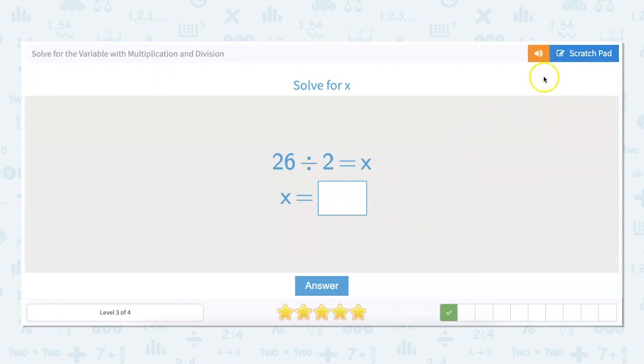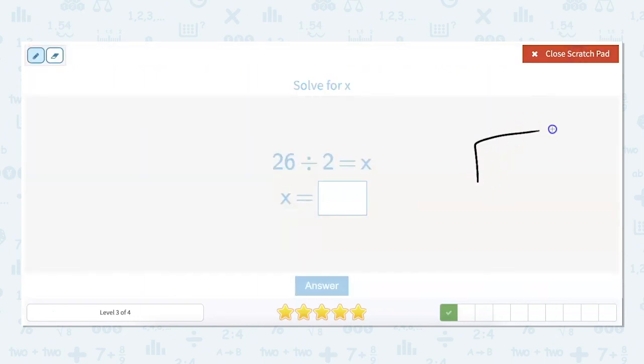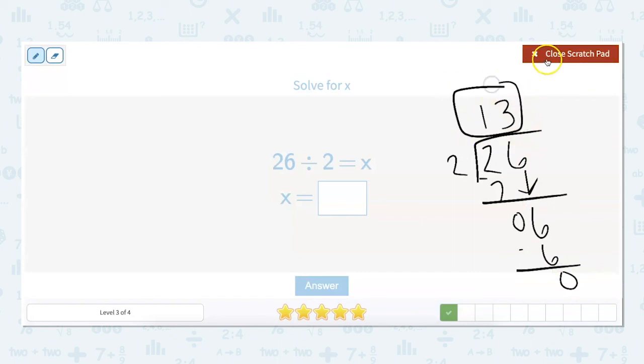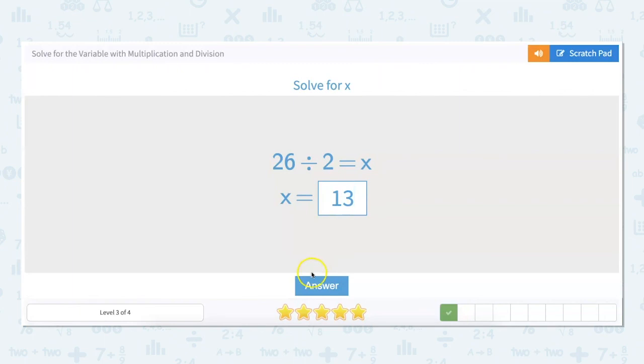So this one 26 divided by 2 equals x. Okay so I have to do the division for this one. So I'm going to go ahead and do 26 divided by 2. How many times does 2 go into 2? 2 times 3 is 6. 6 minus 6 is 0. So our answer is going to be 13. x equals 13.